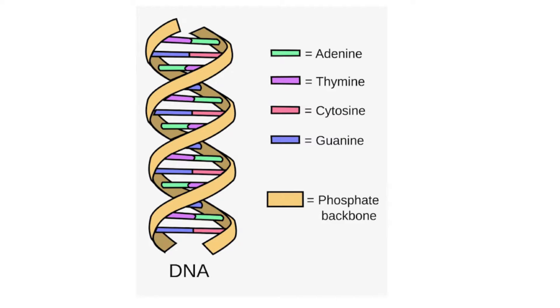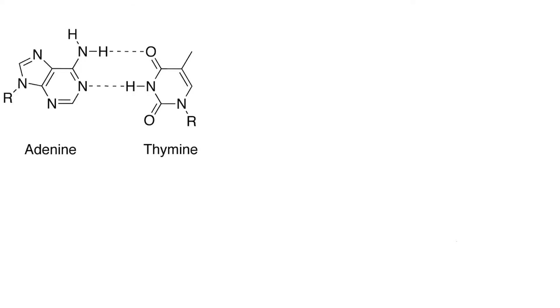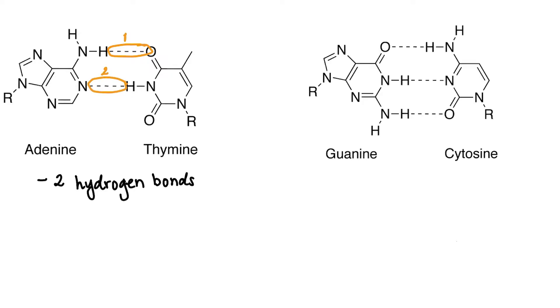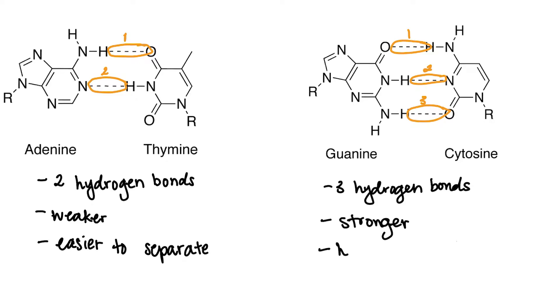They actually look like this, with adenine bonded to thymine via two hydrogen bonds. This can be contrasted by guanine being bonded to cytosine by three hydrogen bonds. Because adenine and thymine have less hydrogen bonds, they are weaker and therefore easier to separate, while guanine and cytosine are stronger and therefore harder to separate.